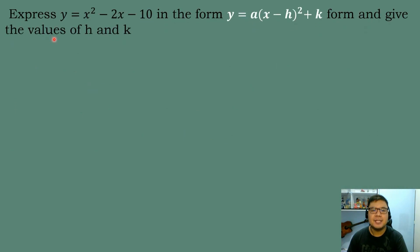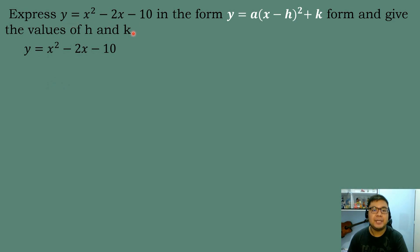Let's have our first example. Express y = x² − 2x − 10 in the form y = a(x − h)² + k, or vertex form, and give the values of h and k. The first thing we need to do is to copy this equation: y = x² − 2x − 10. And then after that, we will perform completing the square, grouping the terms with the variable x.